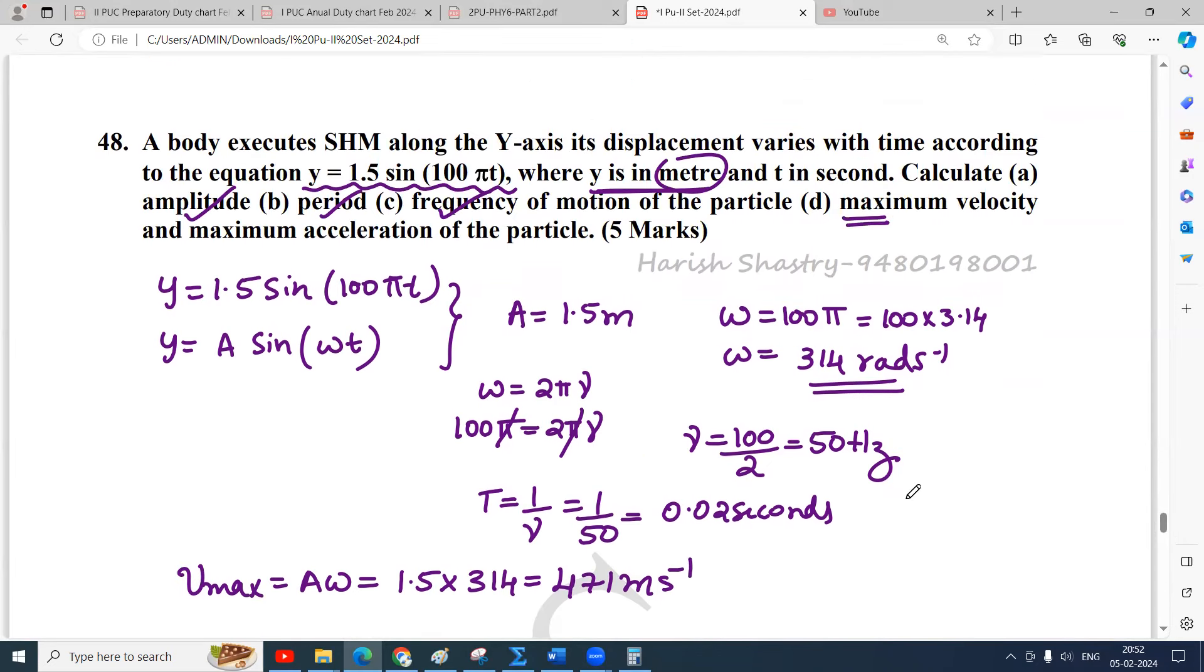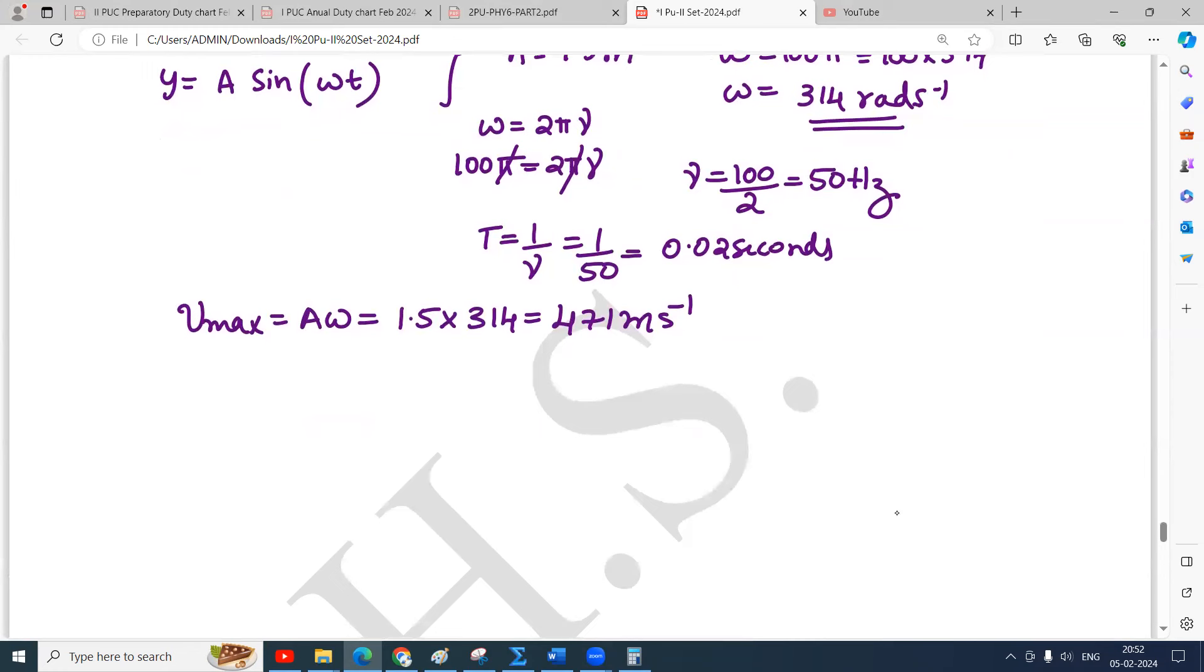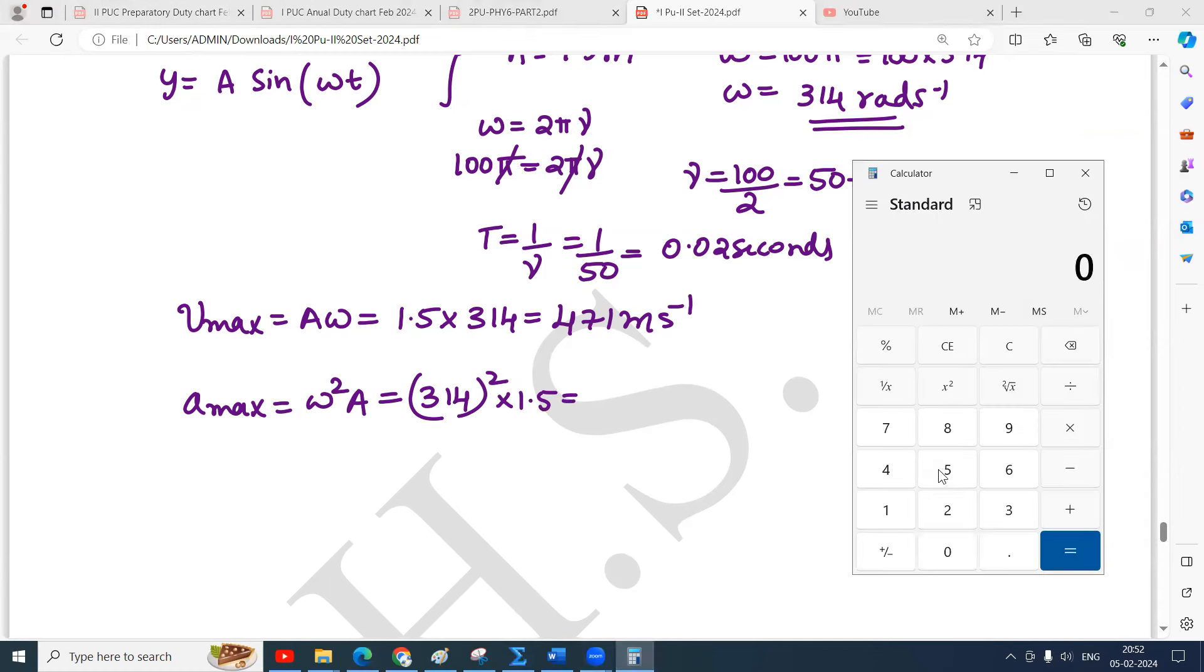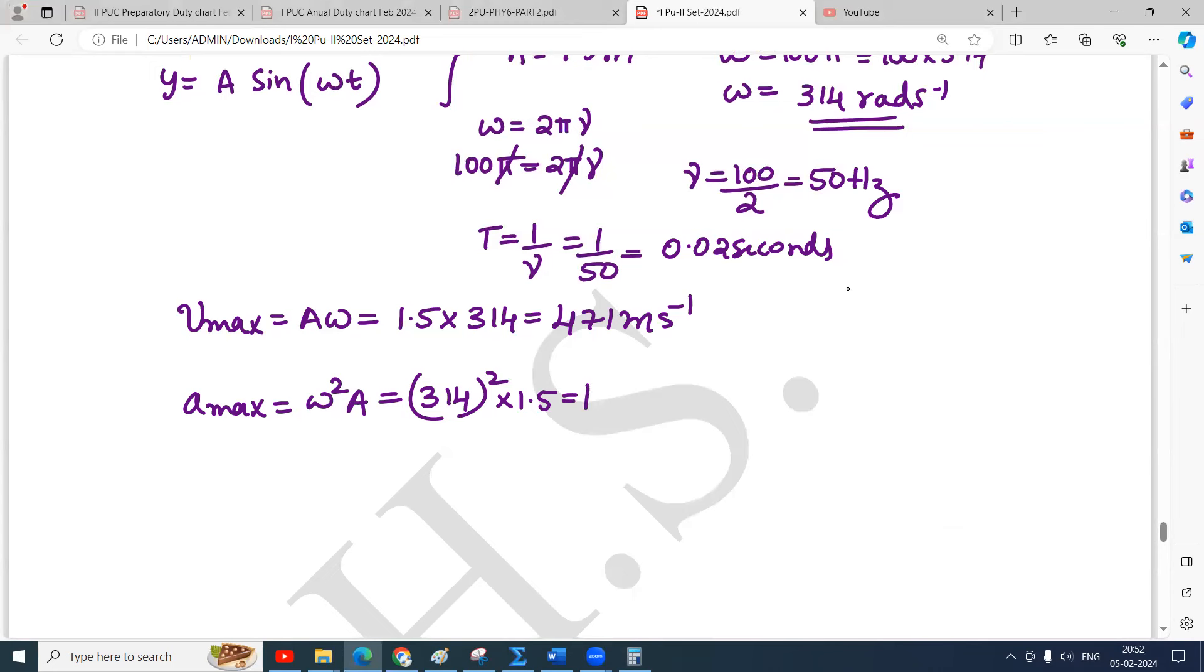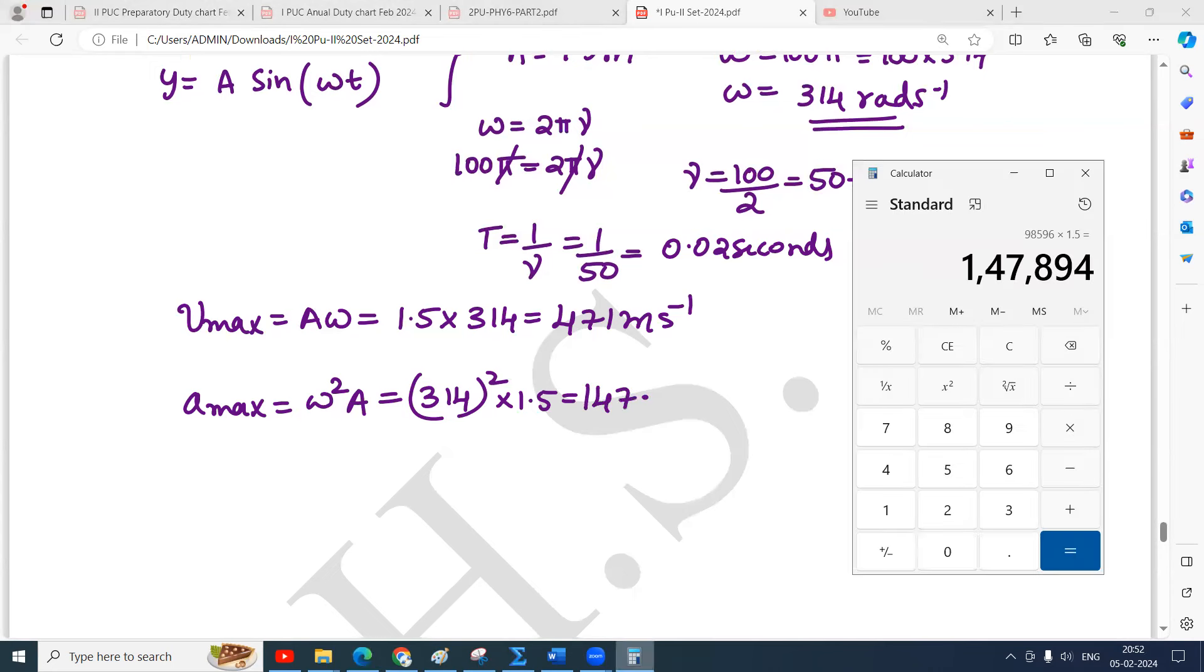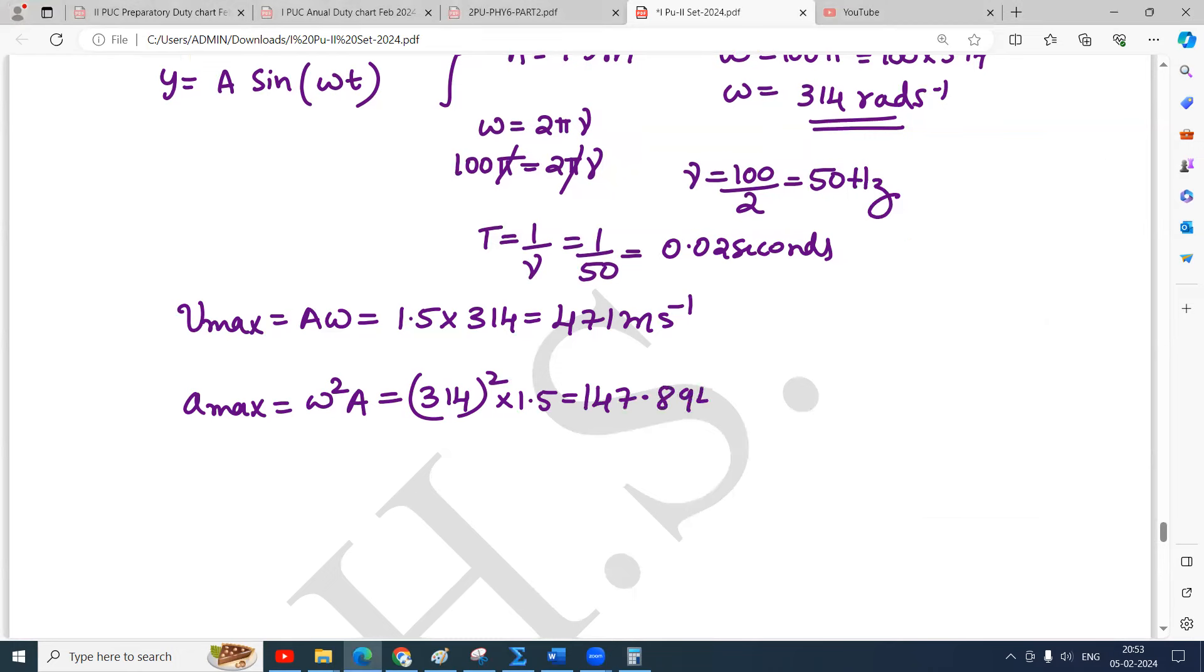Maximum acceleration, a maximum, is omega squared A. That's omega squared into A, which is 314 squared into 1.5. That comes to 147.894. I will write it as 147.894 into 10 to the power 3 meters per second squared, because it is acceleration.